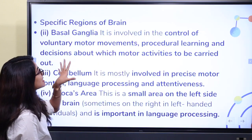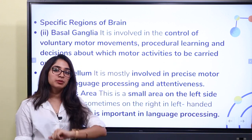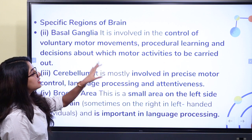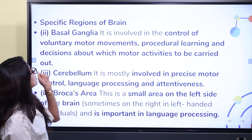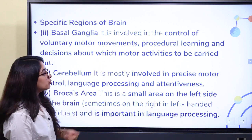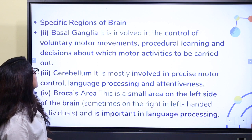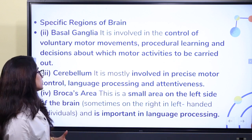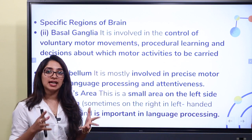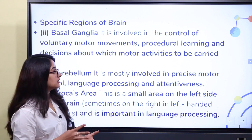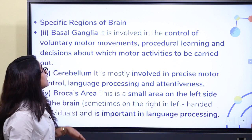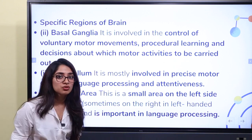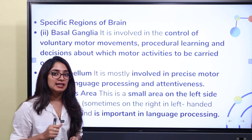The basal ganglia is involved in the control of voluntary motor movements, procedural learning, and decisions about which motor activities to be carried out.